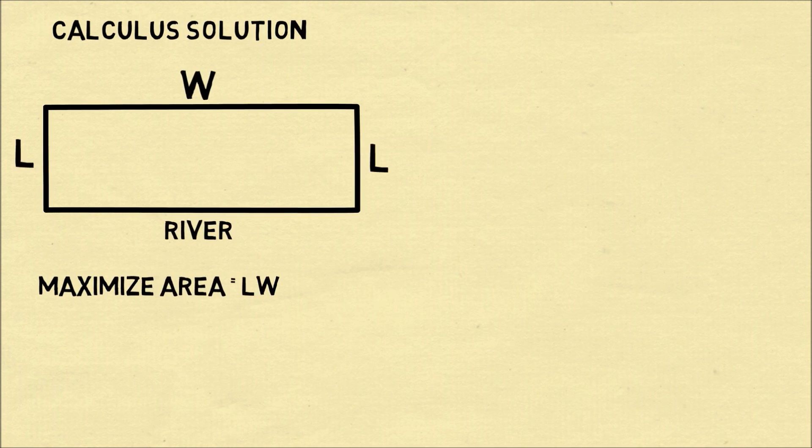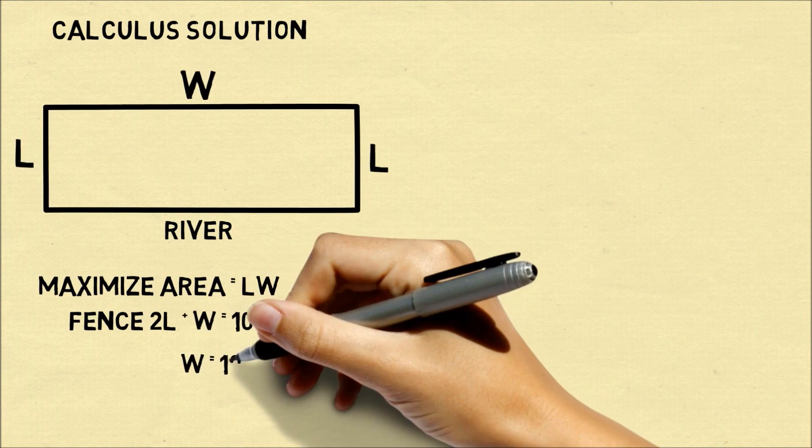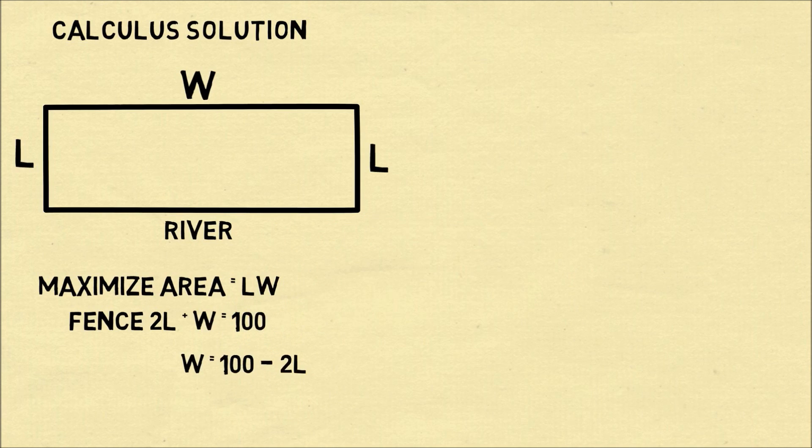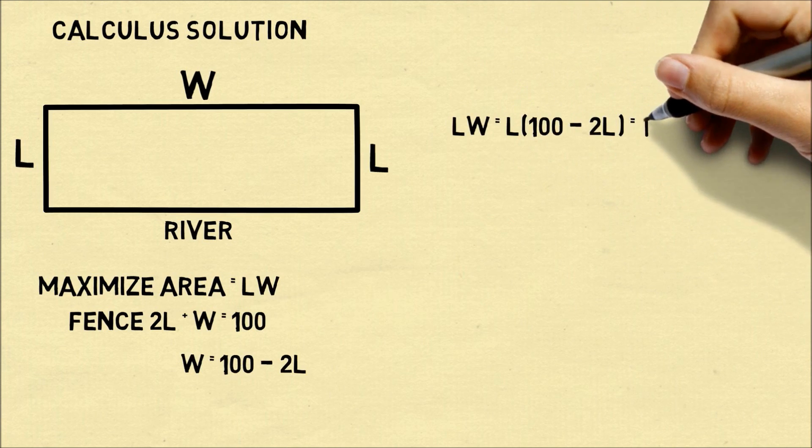So we want to maximize the area which is the length times the width. The amount of fencing will be 2 times L plus W and that needs to be equal to 100. So we can rearrange that equation to say the width of the fence has to be 100 minus 2L.